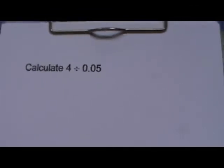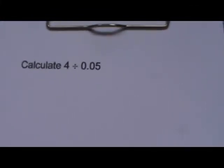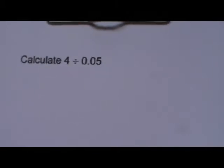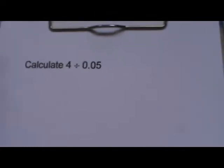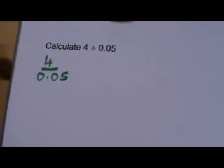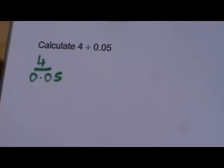Now we're moving on to thinking about how to divide by a decimal. Here's the example 4 divided by 0.05. The thing to do when you're dividing by a decimal is to think of it like a fraction. So it's the same as 4 over 0.05. The 0.05 is the denominator.